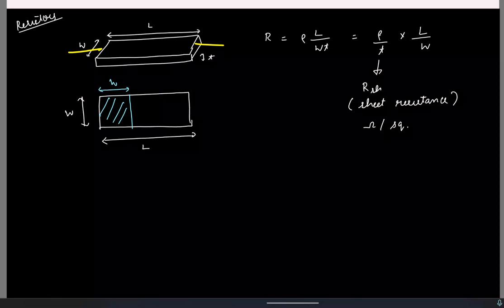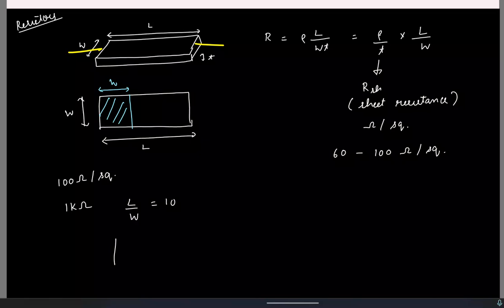For example, if the sheet resistance is 100 ohms per square and you want to realize 1 kilo-ohm, the ratio L/W must be 10. This gives infinite possibilities for individual L and W values — one choice is L = 10 microns and W = 1 micron. Later we will see how to choose the individual lengths and widths using mismatch data.